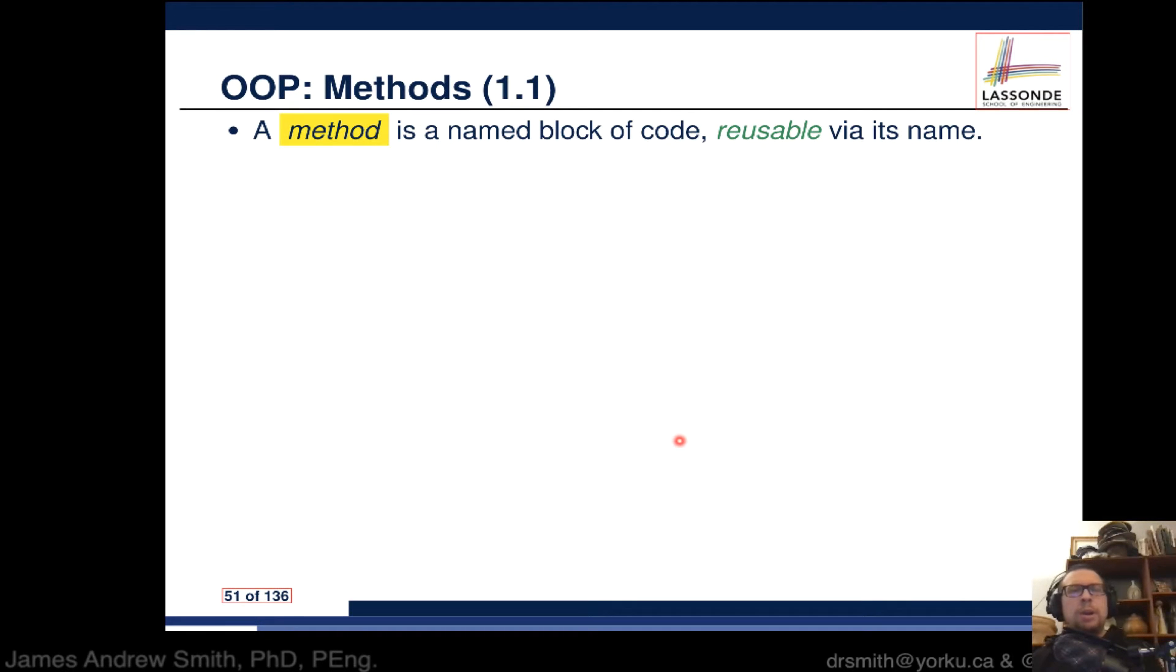In object-oriented programming, methods are essential. If you're coming from procedural programming like C or MATLAB, methods are basically functions. A method is a named block of code that's reusable, just like functions in procedural programming languages.